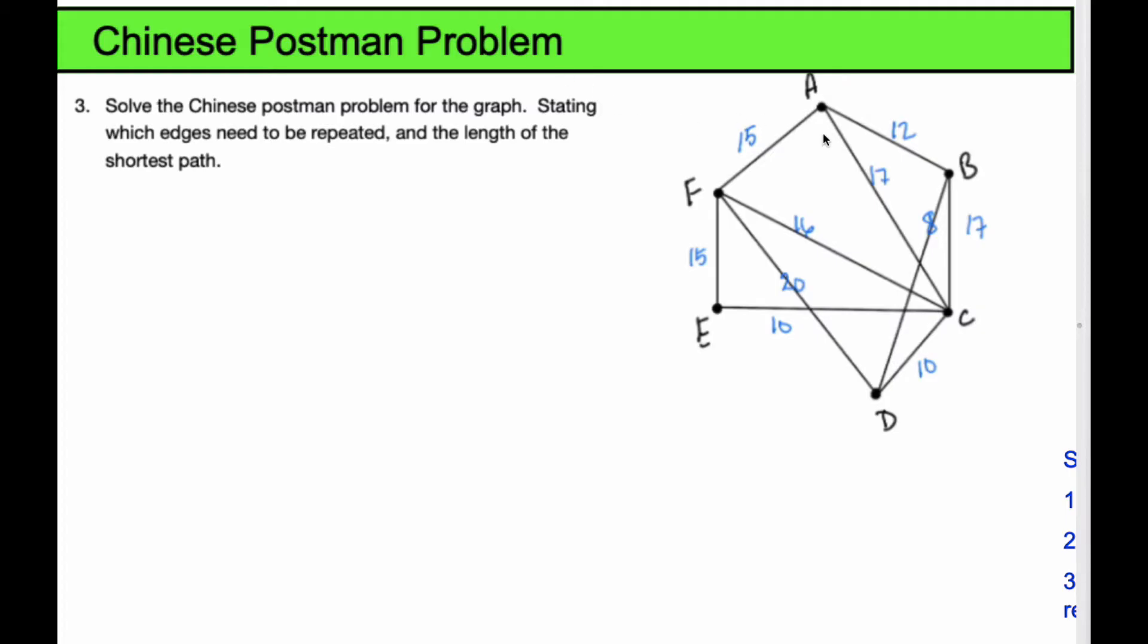We take a look at these and notice that A has a degree of 3, B has a degree of 3, C has a degree of 5, D has a degree of 3, E is 2, and F is 4. So I recognize that in total, I have 4 vertices of an odd degree: A, B, C, and D are all odd.